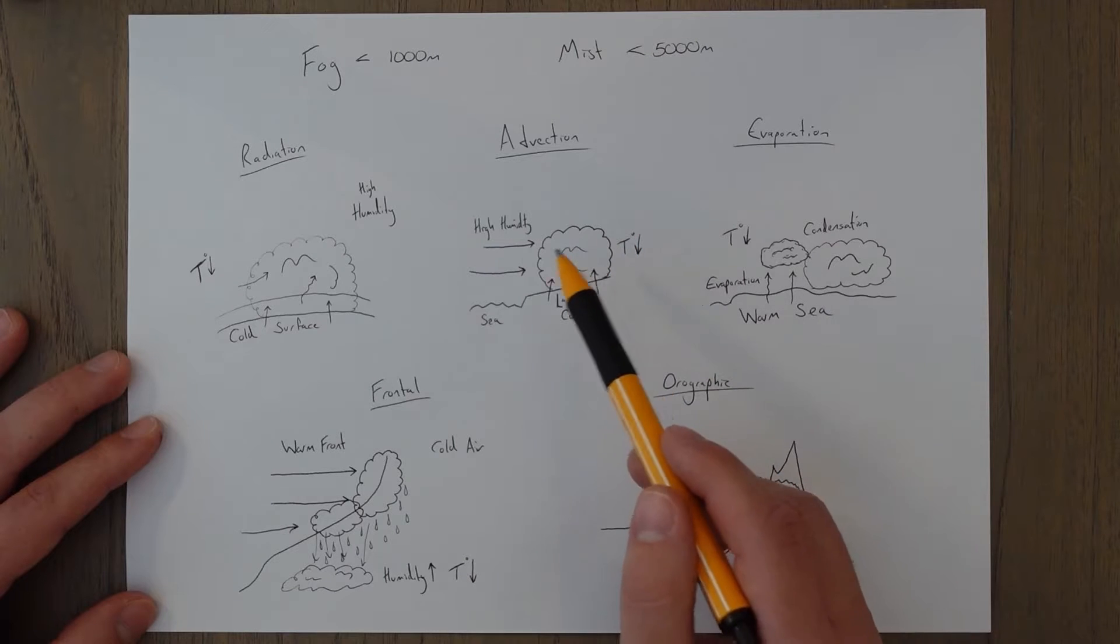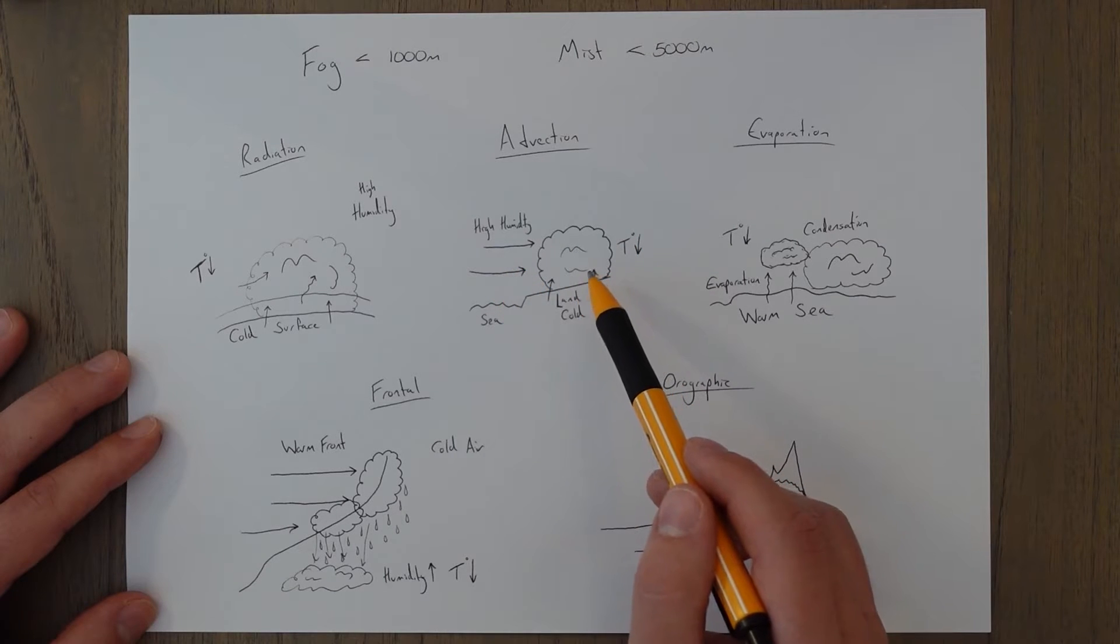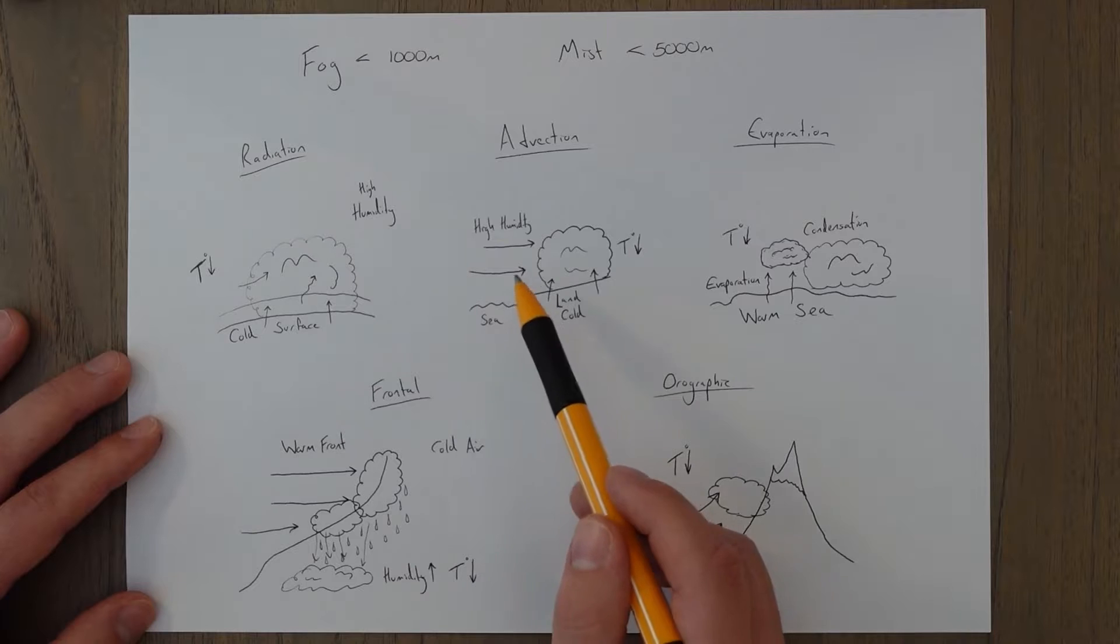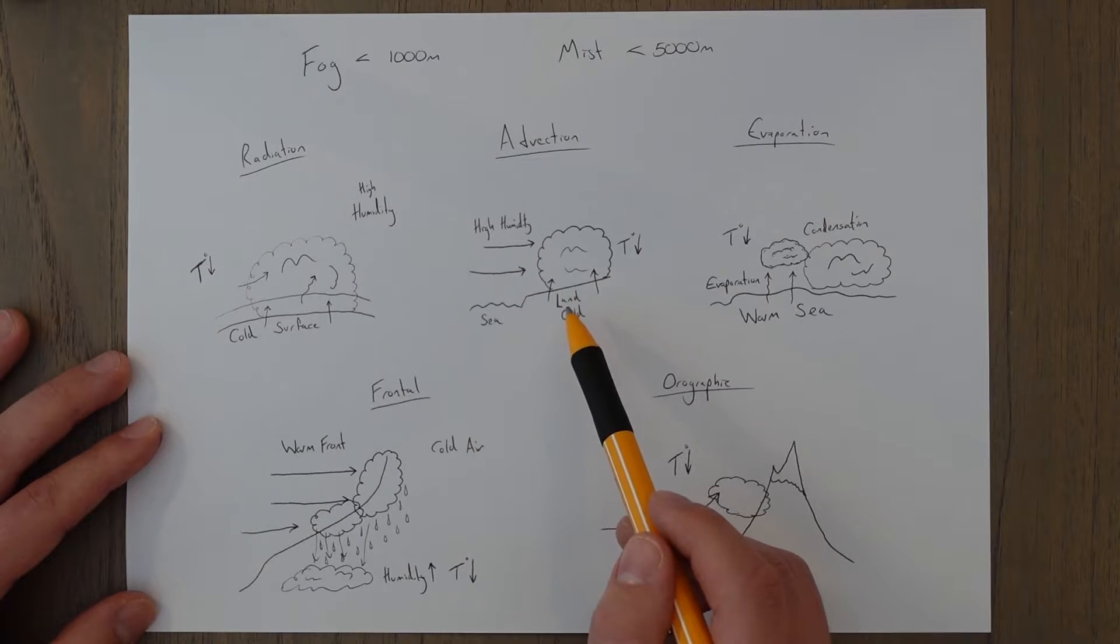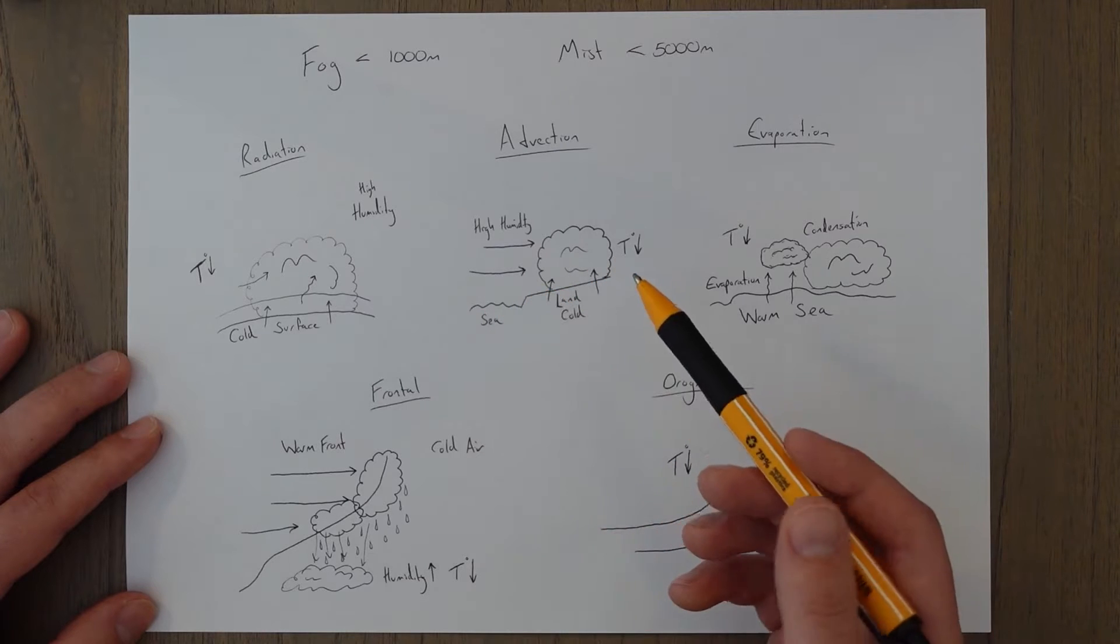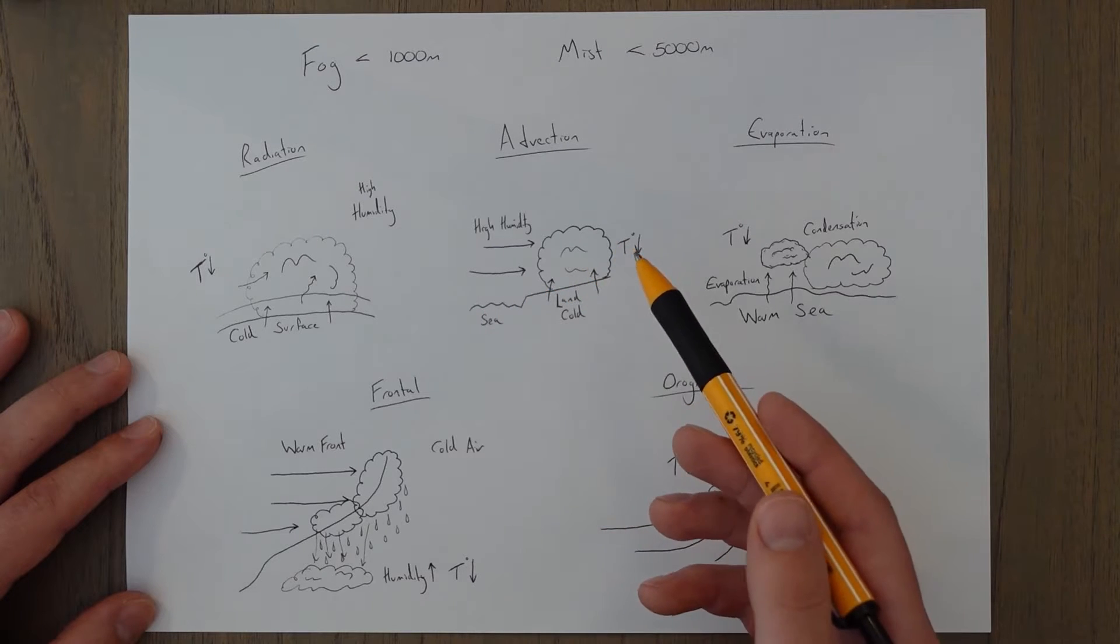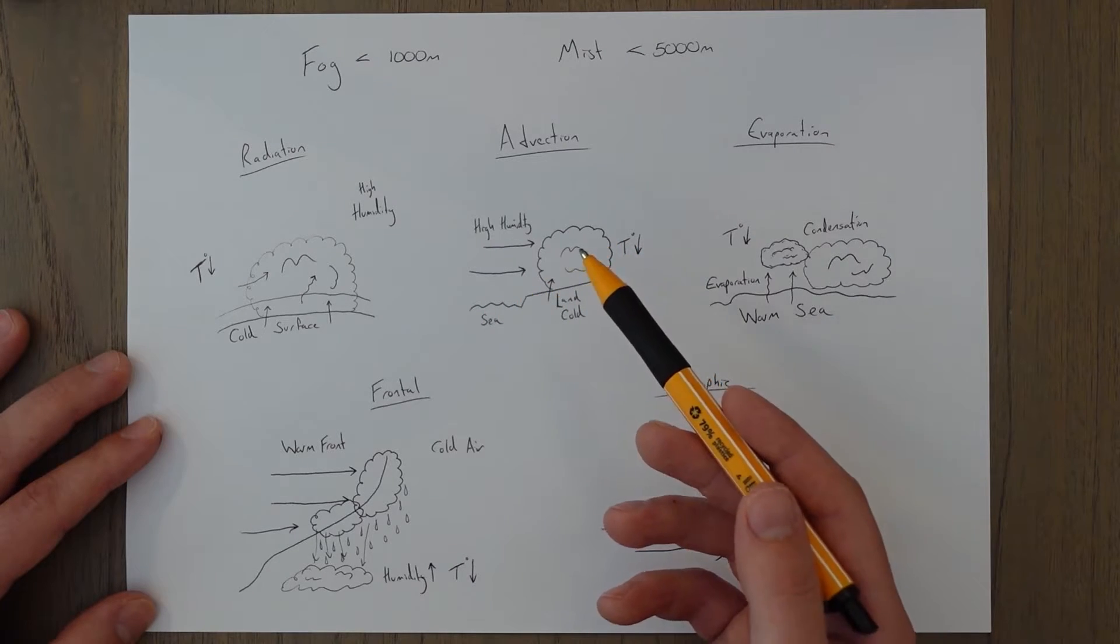You most often see this in coastal areas. So a mass of moisture filled sea air blows into shore, and as it hits the cold land or slightly colder land, this cools down this humid air and forms fog.